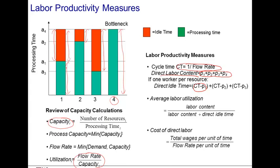We can then define the average labor utilization in the process as a ratio between the labor content, the sum of the processing time, and the labor content plus the direct idle time. The labor content really measures how much green there is in the process versus the labor content plus the direct idle time. The denominator here in this definition captures how much time I have to be paying for in total, which is the labor content plus the idle time.